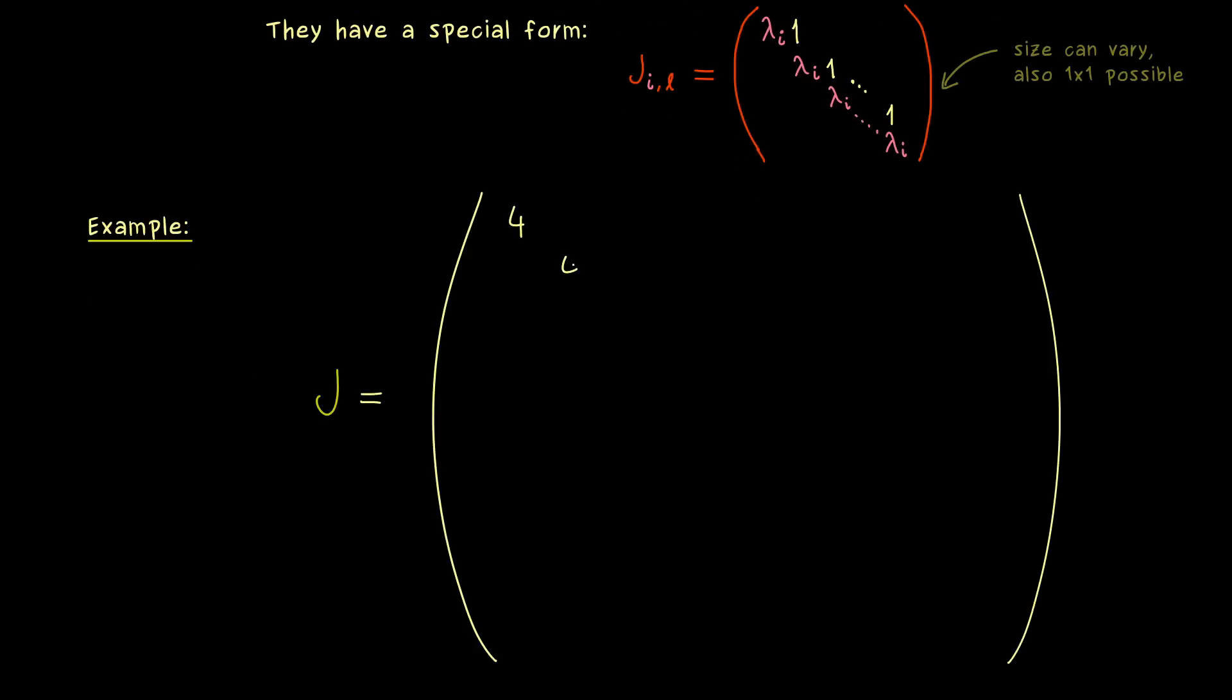And let's say we have the eigenvalue 4 and the eigenvalue minus 3. And moreover you already know some 1s can be involved. So let's say we have them here, here and there.